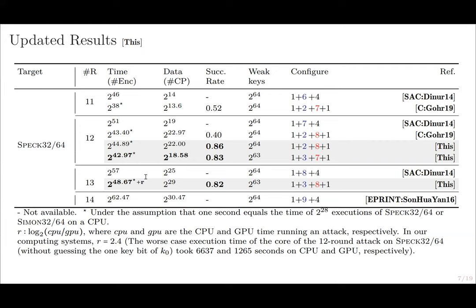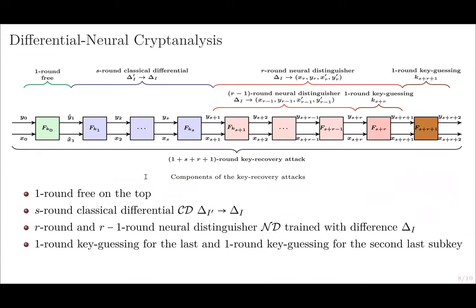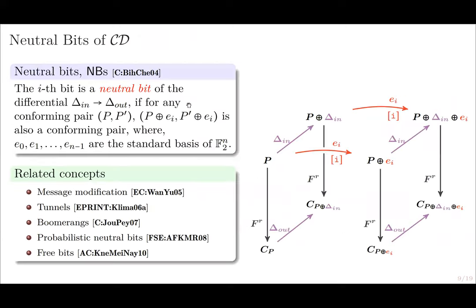Accordingly, differential neural cryptanalysis has more potential than initially exhibited. The methods developed enhance the attack on its classical components. Specifically, they are applications of generalized neutral bits.